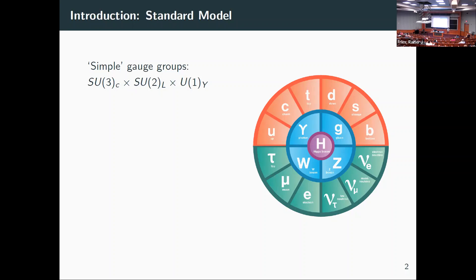Just to get everyone on the same page, some context: the standard model. The standard model is a mathematical construction — a quantum field theory described by these reasonably simple gauge groups. Out of all the symmetry groups you could write down, we're sure lucky that it's just these ones. It gives us quarks on top, leptons on the bottom, and bosons in the middle, and with this particle content we can describe pretty much everything we can see.